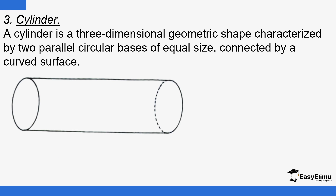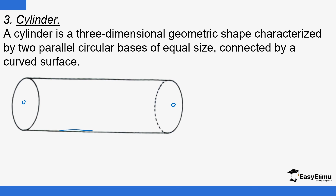There is a cylinder, which has two flat surfaces — one here and one on the other end. A cylinder assumes a uniform cross-section. This circular cross-section is uniform all the way through. A cylinder is a three-dimensional geometrical shape characterized by two parallel circular bases of equal size.